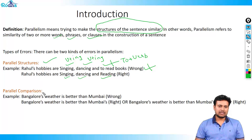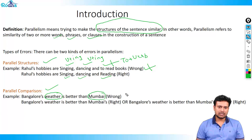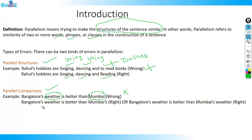The second most commonly asked question type is parallel comparison. Let's look at an example: 'Bangalore's weather is better than Mumbai.' Can you figure out the problem? We are comparing the weather of Bangalore to the city Mumbai — that is a wrong comparison. Weather has to be compared to weather. Always remember: apples are compared to apples. So the right answer is 'Bangalore's weather is better than Mumbai's' — the apostrophe-s automatically implies the weather of Mumbai.